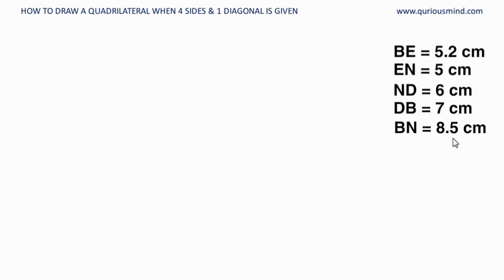Let's draw the rough figure first. If we see here we actually have dimensions of two triangles BEN and BDN, and we can draw these two triangles using the side-side-side type of construction.